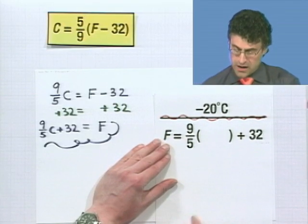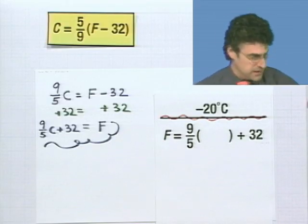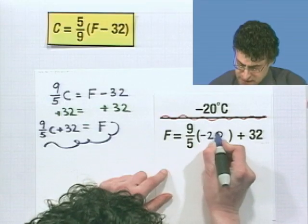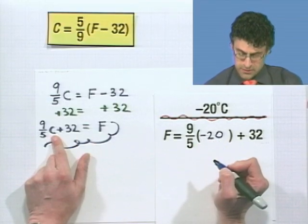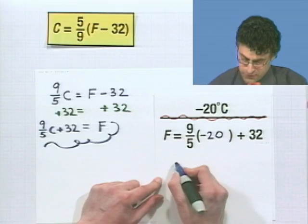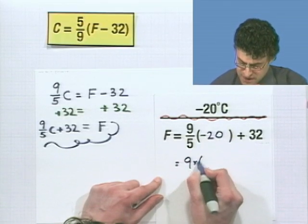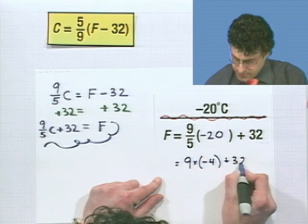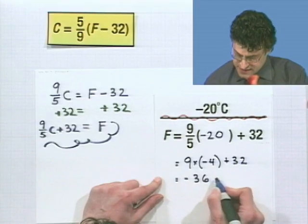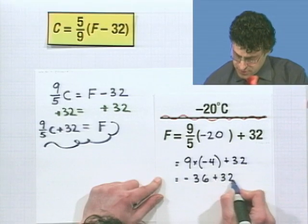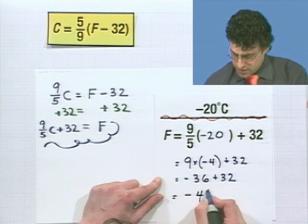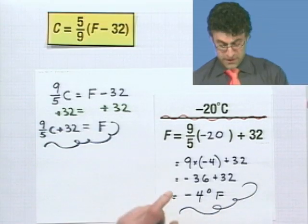Now, if you want negative 20 degrees Celsius, that's going to be a little bit colder. So I'm going to use blue. So I put a negative 20 in for the C value. And I've got to now multiply that by 9 fifths. Well, negative 20 divided by 5 is actually negative 4. So this equals 9 times negative 4 plus 32. And 9 times negative 4 is negative 36 plus 32. And negative 36 plus 32 is negative 4 degrees Fahrenheit. And there you have it. Pretty cool.